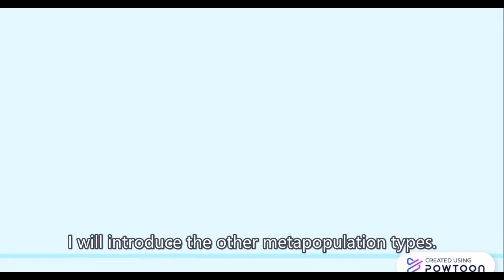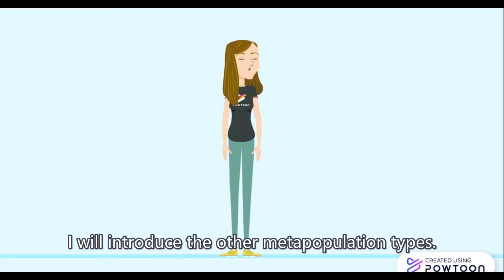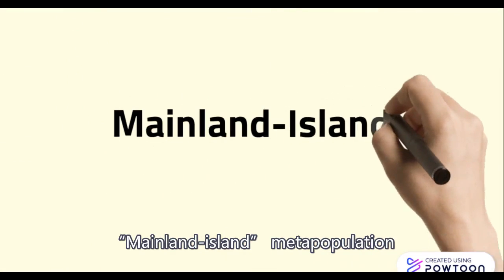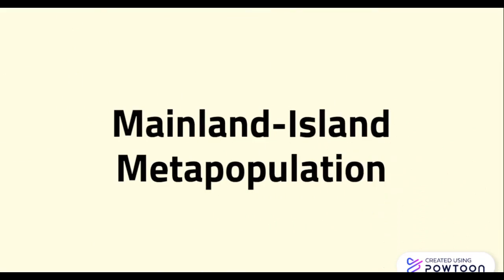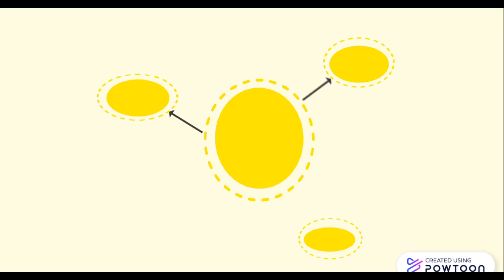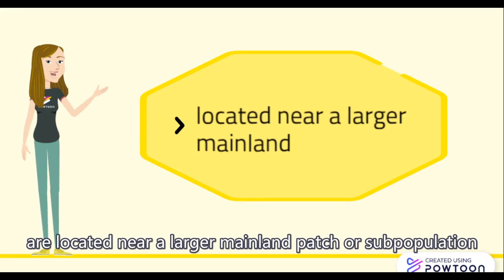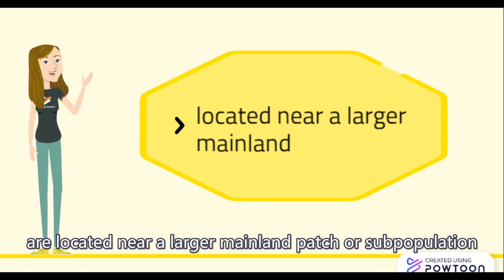I will introduce the other metapopulation types. Mainland island metapopulation. This model describes that the patches or subpopulations are located near a larger mainland patch or subpopulation.